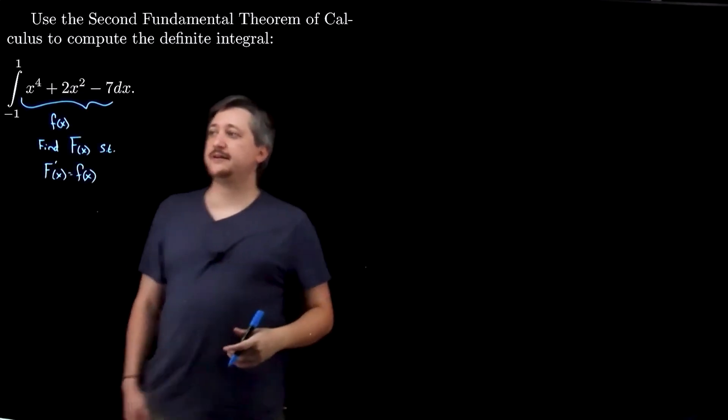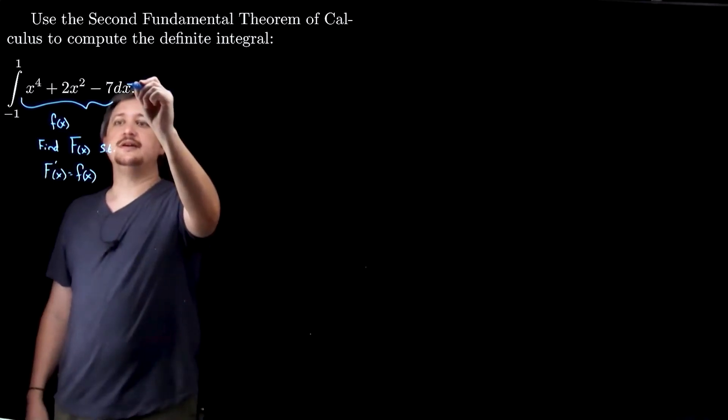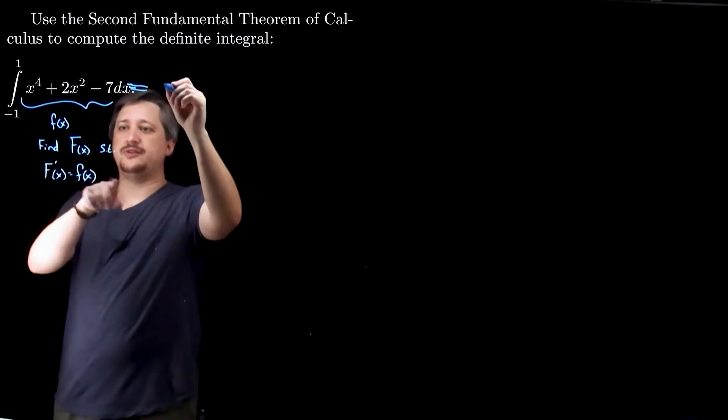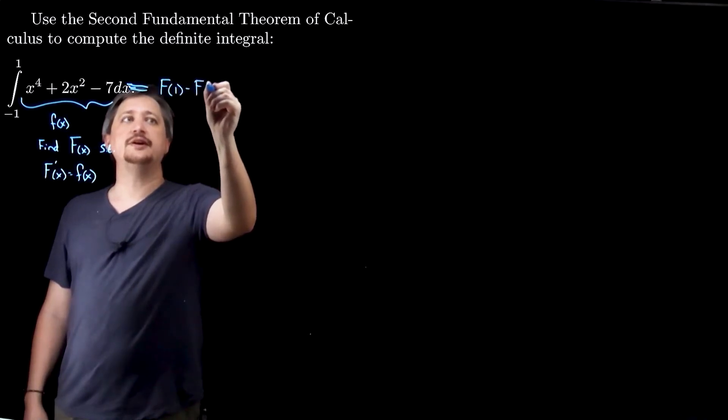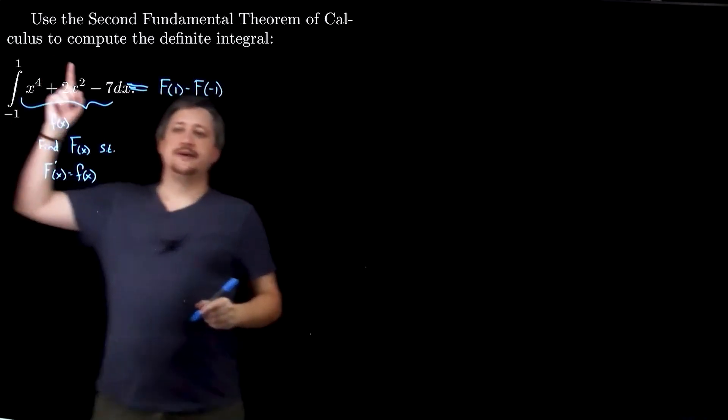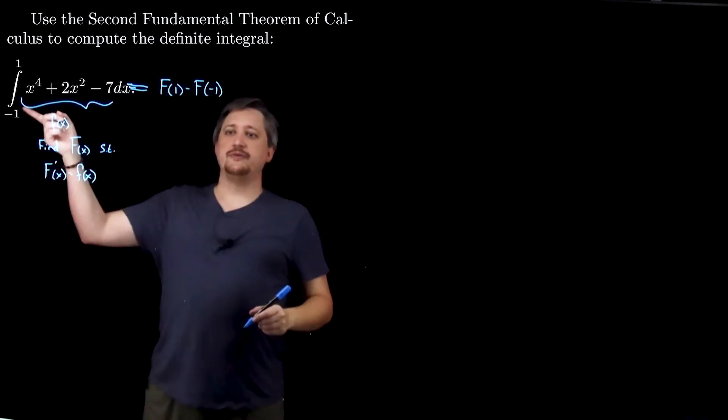then it turns out that this thing is just going to equal, let's see, if I'm using big F here, it's just going to equal F of 1 minus F of negative 1, right? The antiderivative of the top minus the antiderivative of the bottom.